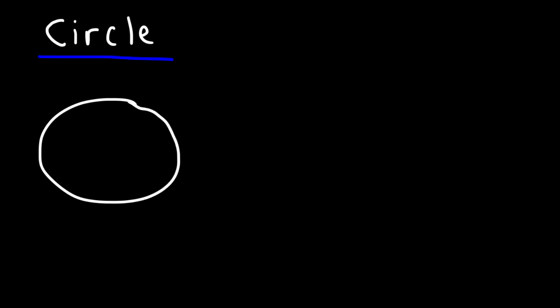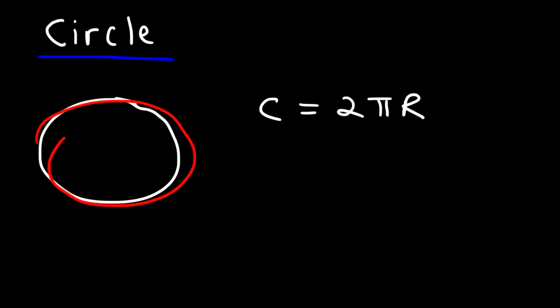In this video we're going to focus on 2D shapes and also the equations that go with them. Let's start with the circle — one of those shapes you need to know. There are two main formulas. The circumference of the circle, which is the distance around the circle, is 2πr, where r is the radius — the distance between the center of the circle and any point on the circle.